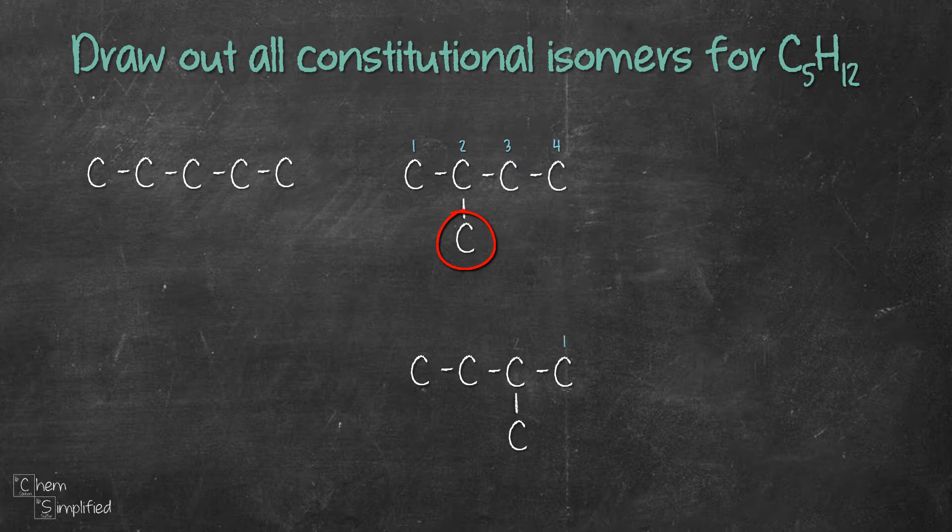The one at the bottom, when we count starting from the end that is closest to the substituent, we can see that it's actually the same structure. 4 carbon chain with substituent on the second carbon. So it looks like we only have one structure for 4 carbon chain.